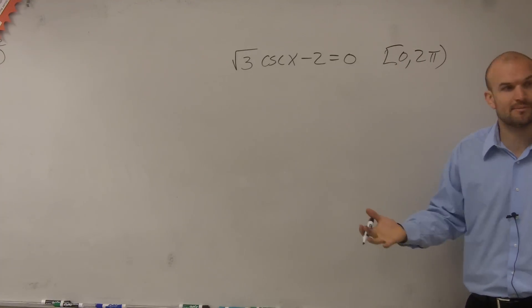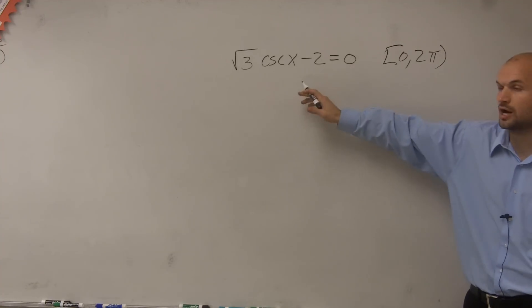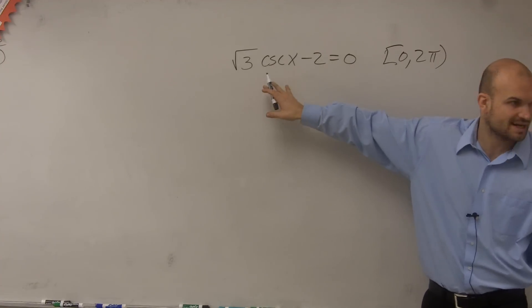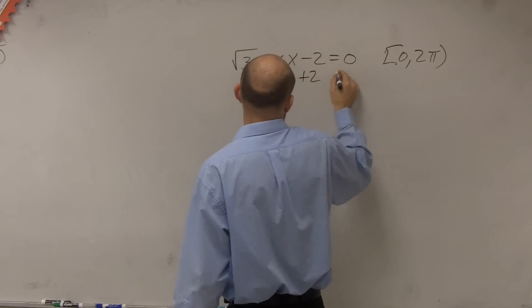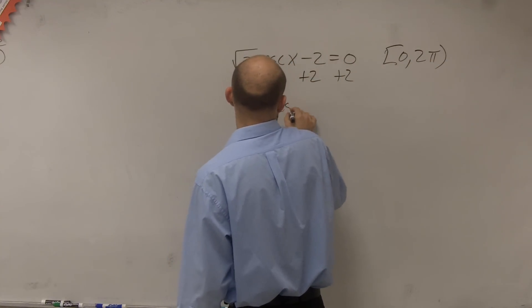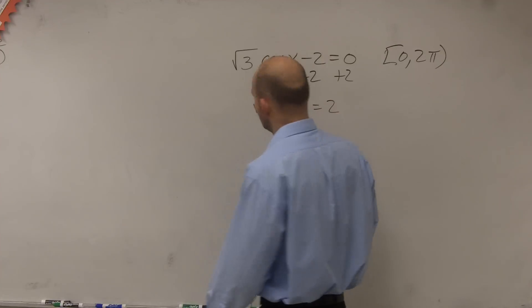So again, like we worked on before, we have to evaluate for our cosine function. So we need to isolate it, right? So let's use our inverse properties to isolate. So we add 2 to both sides. So I get square root of 3 times cosine of x equals 2.